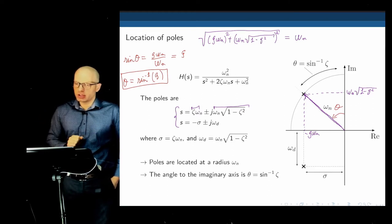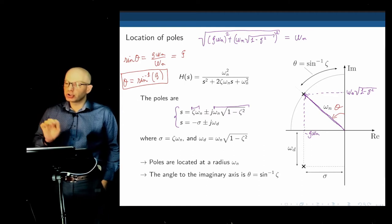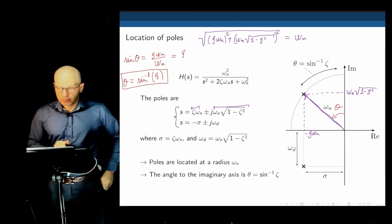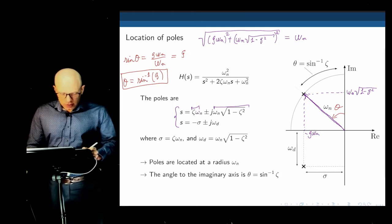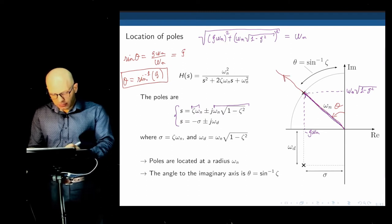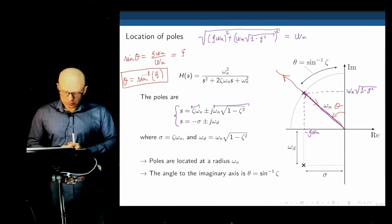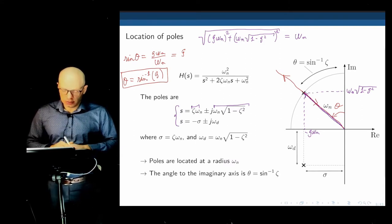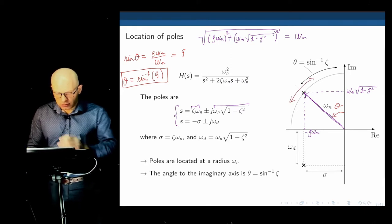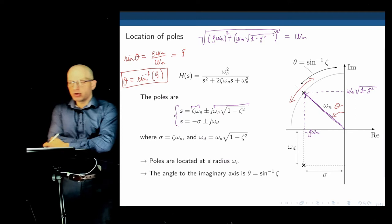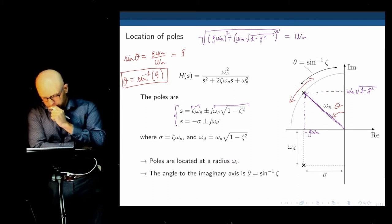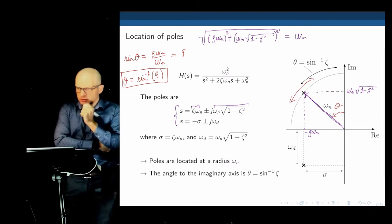If we move this pole along a line up and down, only the natural frequency changes while the damping ratio remains constant. If we move the pole along an arc, the distance to the origin doesn't change, so the natural frequency remains constant and the damping ratio changes. By placing a pole at a specific location, we know both the damping ratio and the natural frequency — in other words, we specify the settling time and the overshoot of that pole.